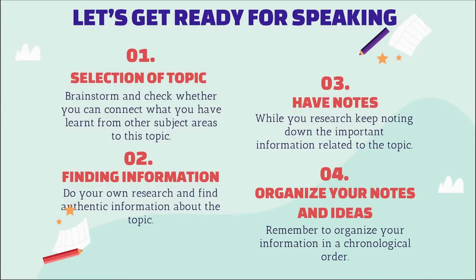The first step is selection of topic, where you brainstorm and check whether you can connect what you have learned from other subject areas to this topic. The second step is finding information, where you do your own research and find authentic information about the topic. Third, and very important, have notes — while you research, keep noting down important information related to the topic. Fourth, organize your notes and ideas — remember to organize your information in a chronological or sequential order.